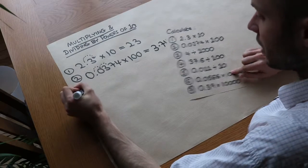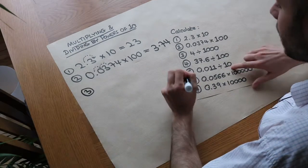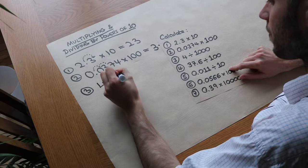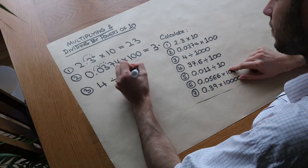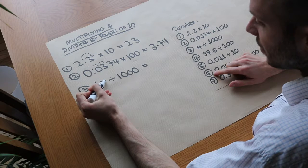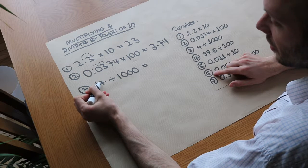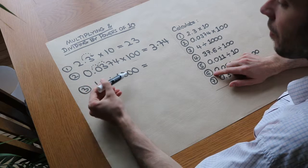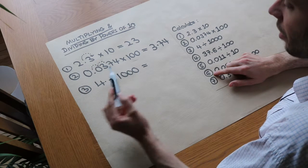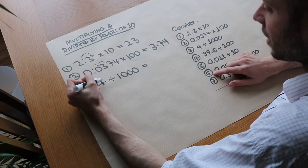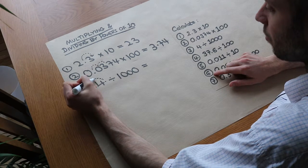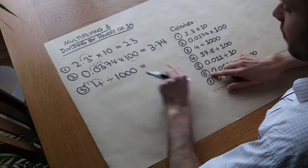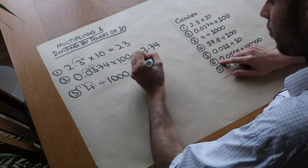When you divide, the decimal point moves the other way. So for 4 divided by 1,000: the decimal point is effectively just after the units digit even though it's not written in. Since 1,000 has three zeros, it's going to move three places to the left. Let's write some zeros before it to see where it's going.